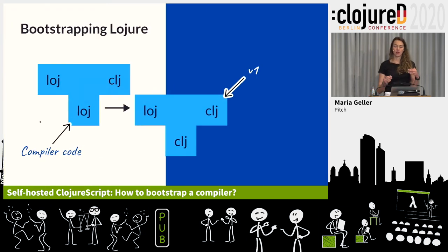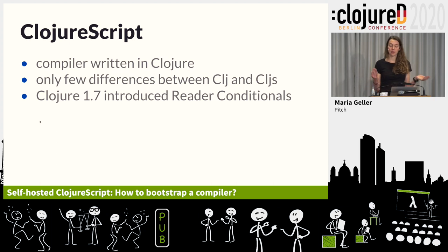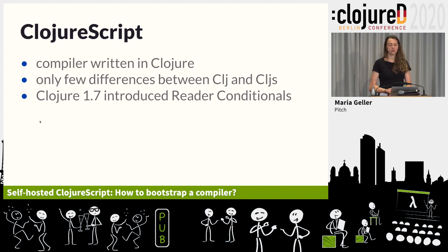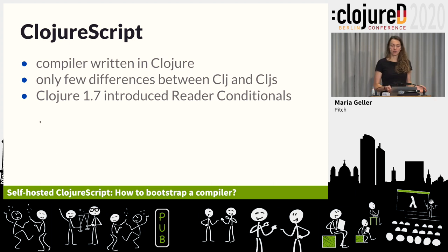Now that we have a better example of the basics of bootstrapping, how was it done for ClojureScript? The first ClojureScript compiler was written in Clojure, and it still is. The cool thing is that Clojure and ClojureScript are basically the same language apart from a few differences, like the platform they run on — Java instead of JavaScript. The syntax is the same, so if you can write Clojure, you can likely write ClojureScript. This is a big advantage compared to other projects — for example, Go, where they had to take the compiler written in C and import it into Go.